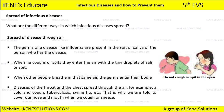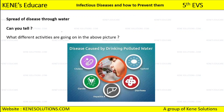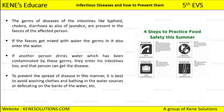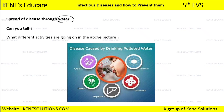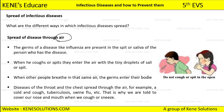Now that you know what infectious diseases are, let's look at the different ways they spread. First is the spread of disease through air. Second is the spread through water. Third is the spread through food. These are the three basic mediums through which diseases spread, and most diseases spread through air.